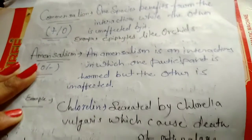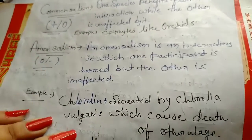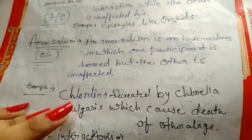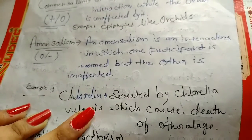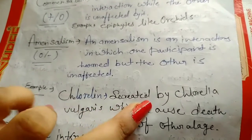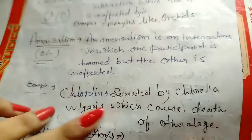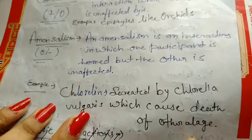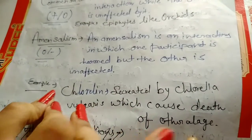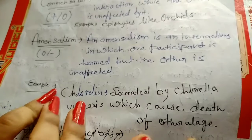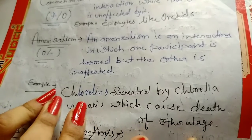This is called amensalism. An example of amensalism is chlorellin, secreted by Chlorella vulgaris, which causes the death of other algae.